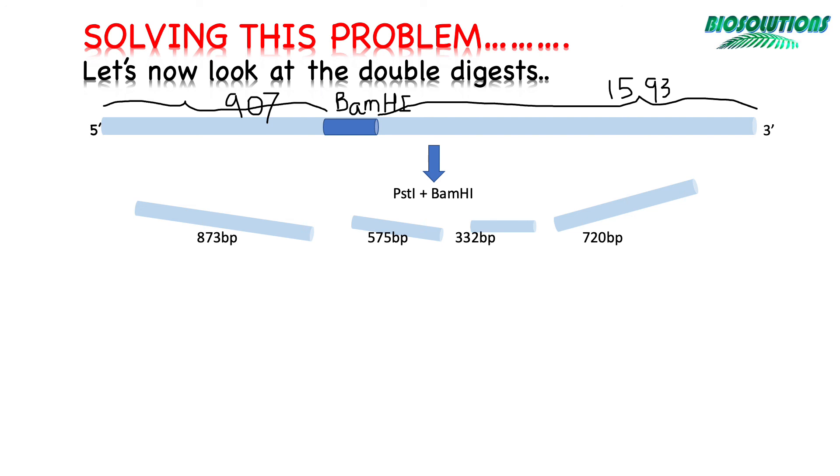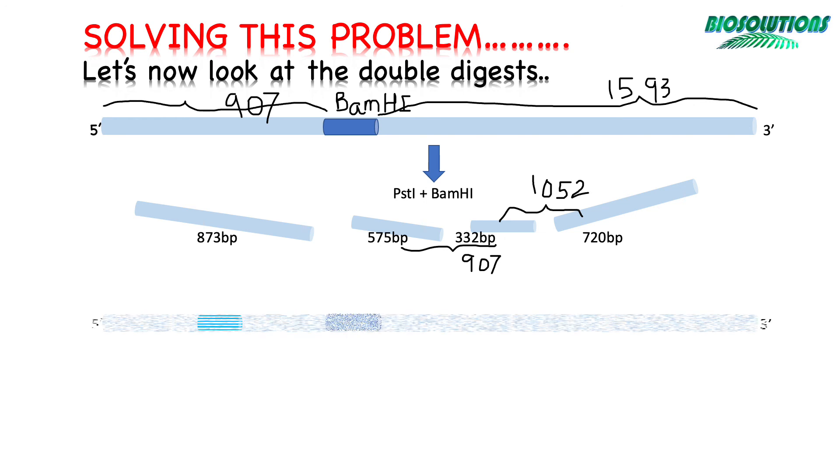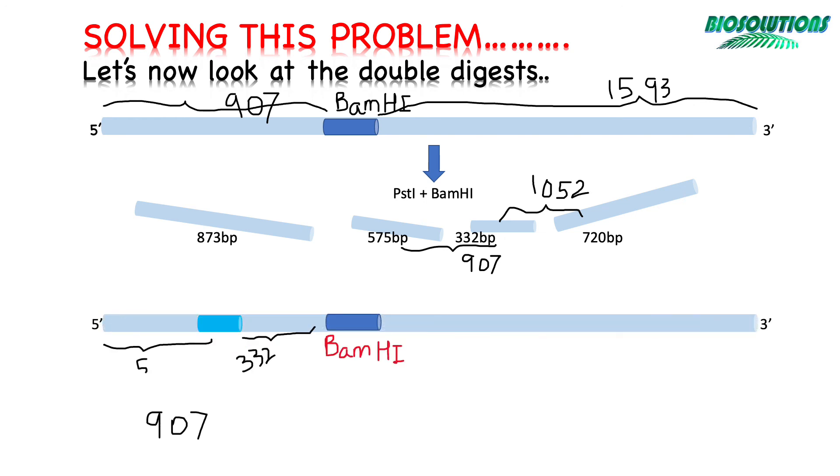We have to try a few combinations to acquire a correct restriction map. Next we observe that if we subtract 332 base pairs from 1052 base pairs, we get 720 base pairs. Hence this should be the next possibility where around the BamHI site we have 332 and 720 fragments.